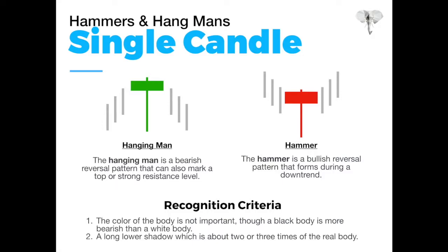For this video we're doing single candlestick patterns and we're going to dive right into hanging mans and hammers. A hanging man is a bearish reversal pattern that can also mark a strong top or strong resistance level. Price action is going up, up, and up, and then it hits a structural resistance zone — something we're going to cover in the next video.